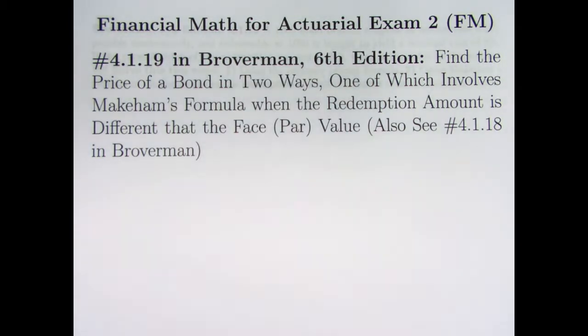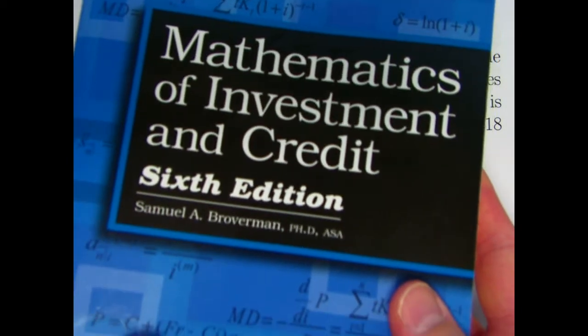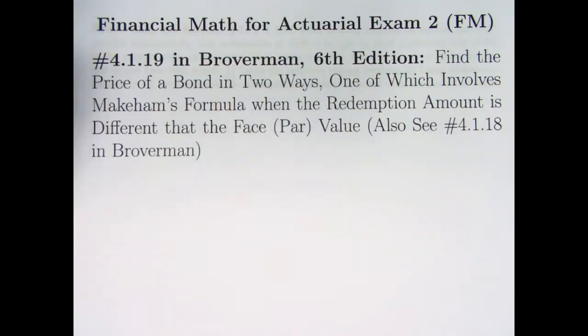We're going to continue with chapter 4 on bonds. We're going to be looking at problem 4.1.19 from this book, The Mathematics of Investment and Credit, 6th edition by Samuel Broverman, which we've taken most of our problems from.